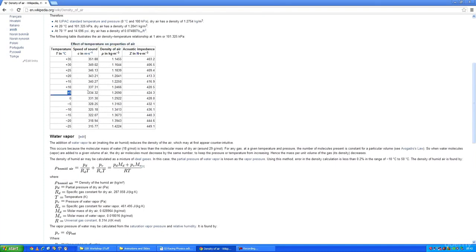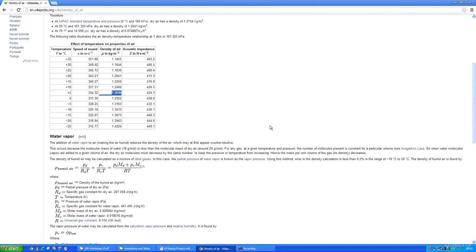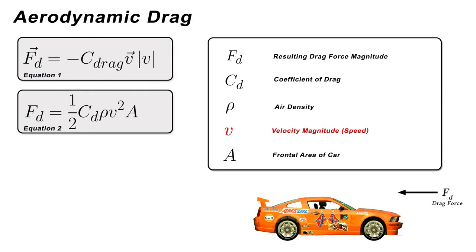Next in the equation we have v, which is the magnitude of our velocity vector—in other words, our current speed. You can see here that we have that squared velocity term that we've already discussed.